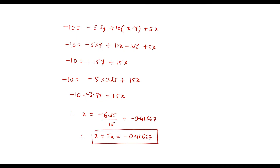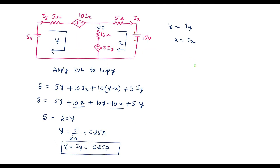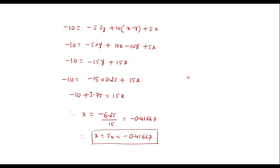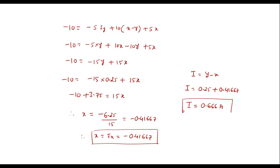Now, the current i through the 10 ohm resistor is equal to y minus x. Therefore i equals 0.25 minus (minus 0.41667), which equals 0.666 amps. This is the current through the 10 ohm resistor.